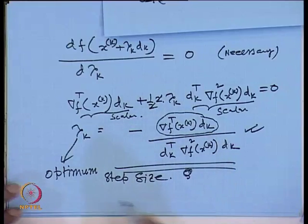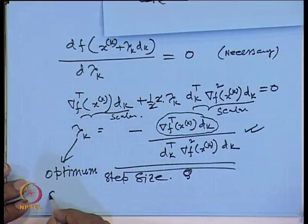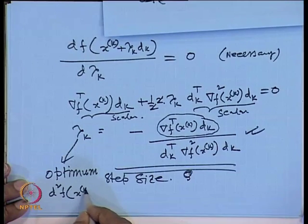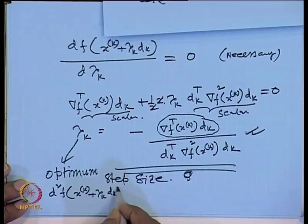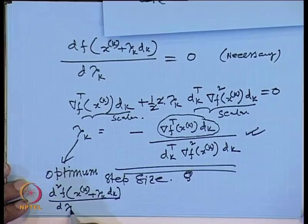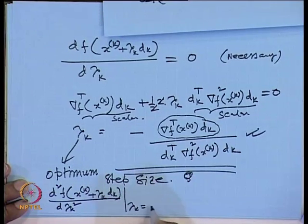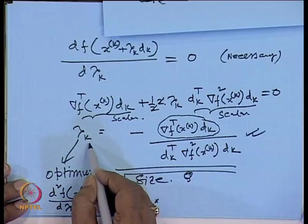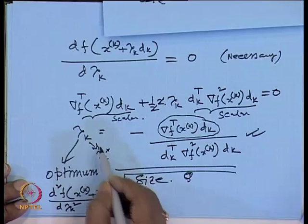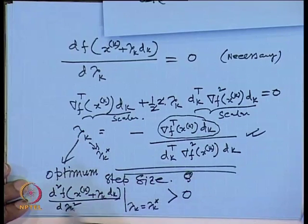To verify this is indeed a minimum, we check that the second derivative of f(x^(k) + lambda_k d_k) with respect to lambda_k, evaluated at lambda_k = lambda_k*, is greater than zero — confirming the function value is decreasing as much as possible for this choice of lambda_k. We will stop here today. Next we will continue with this and write the algorithm, then discuss how to implement it on a digital computer.